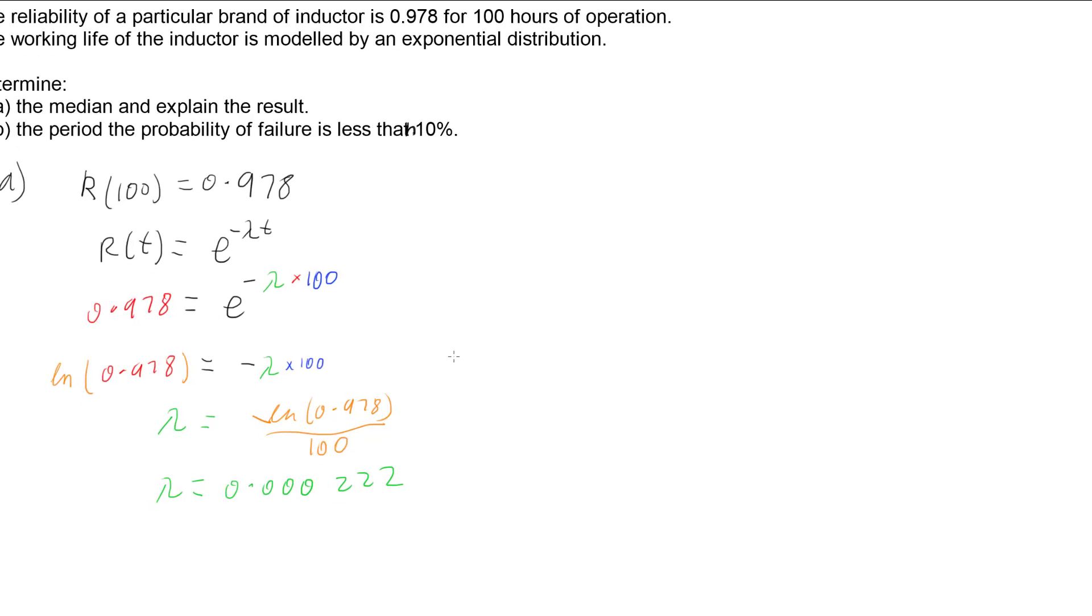What helps us work out the median is the function for median for an exponential distribution. And that rule, the median, is given by the natural log of 2 divided by lambda. So we're going to have the natural log of 2 divided by 0.000222. And so that gets us a median of 3,115.883. So we've got the median.